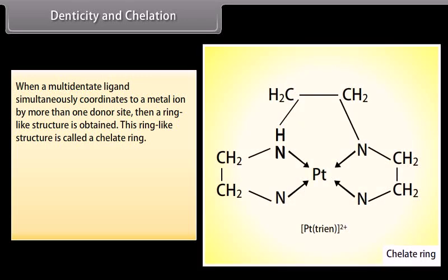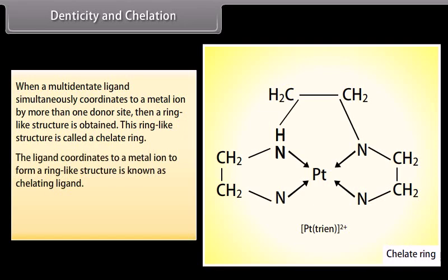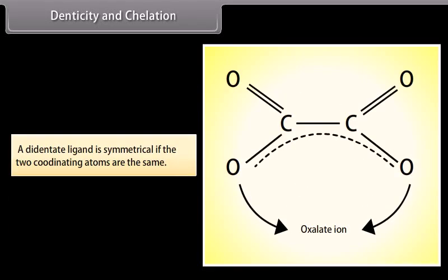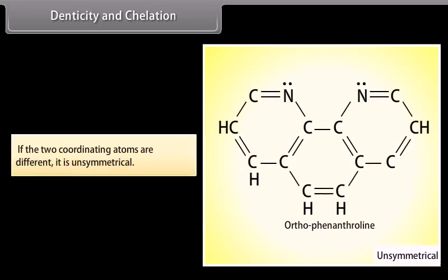Denticity and Chelation: When a multidentate ligand simultaneously coordinates to a metal ion by more than one donor site, a ring-like structure is obtained, called a chelate ring. [Pt(trien)]2+ is an example of chelation. The ligand that coordinates to a metal ion to form a ring-like structure is known as a chelating ligand. The number of such ligating groups indicates the denticity of the ligand. A bidentate ligand is symmetrical if the two coordinating atoms are the same, and unsymmetrical if they are different.